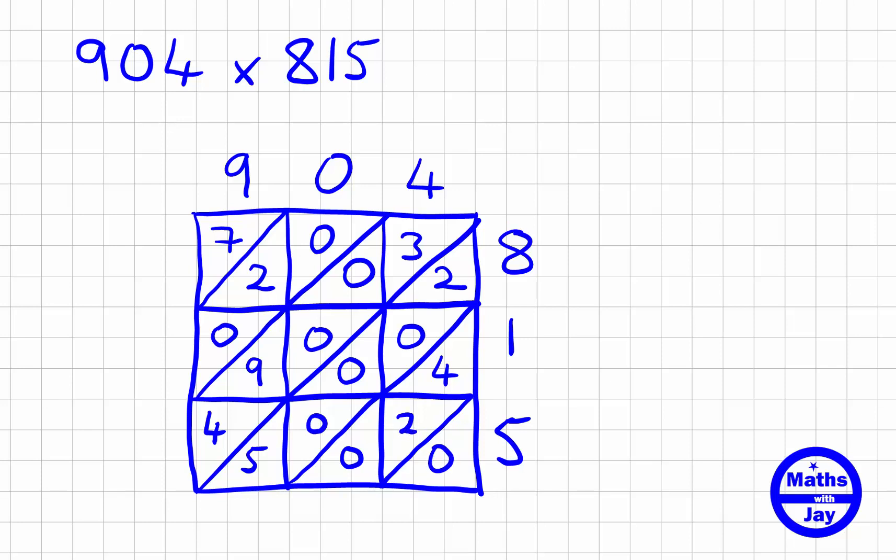Now to work out the answer, we simply add up along the diagonals. In the first one at the bottom right, we've got zero—I'm going to write that number down here. Then the next diagonal has four, two, and zero, so that's four plus two plus zero equals six. The next one's got five, zero, zero, zero, and two, so that's five and two equals seven.